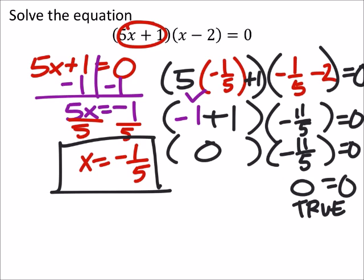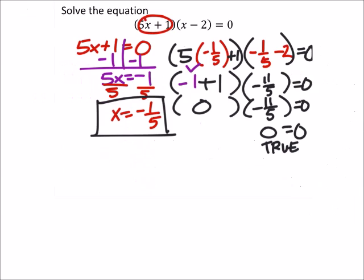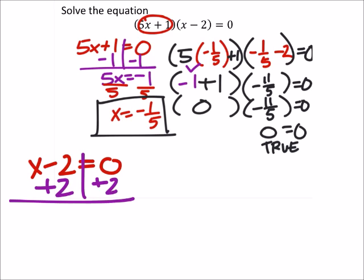We need to look at x minus 2 and make that equal to zero as well. So, let's look at x minus 2 and make that equal to zero. And to solve this one, it shouldn't be too hard. Just add 2 to both sides, and we get x is equal to 2. So, this should be the answer to the second part. Let's check it.